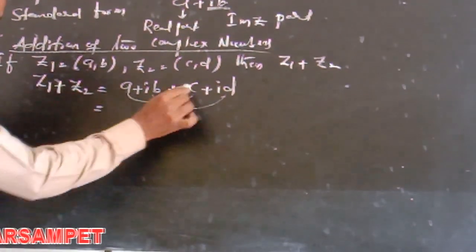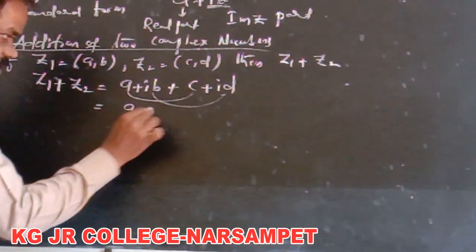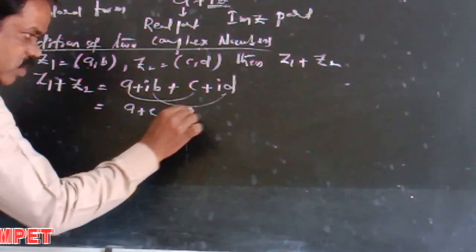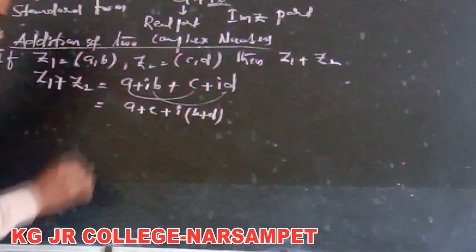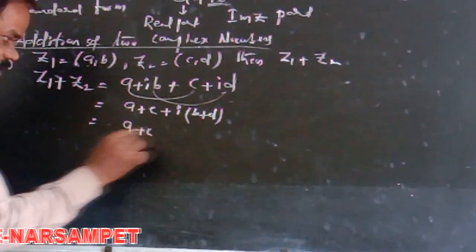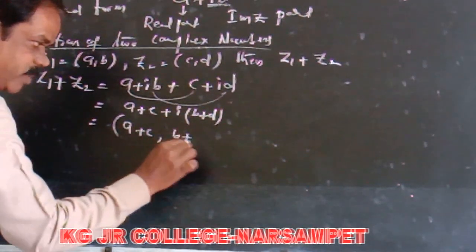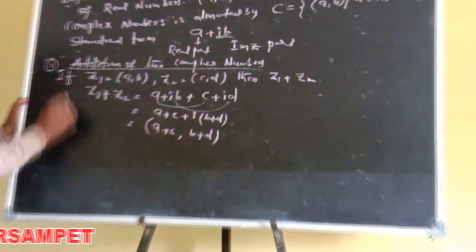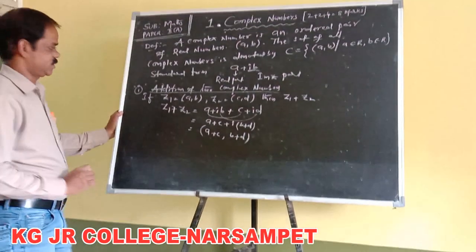How to add: real part to real part means a + c. And imaginary part: i is common, next b + d. So the ordered pair form of this is (a + c, b + d). This is the concept of addition of two complex numbers.